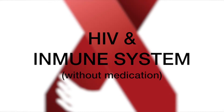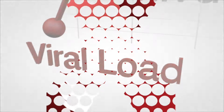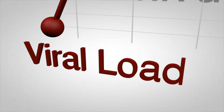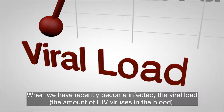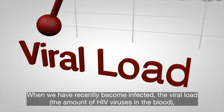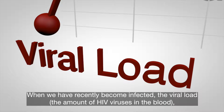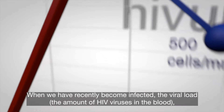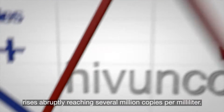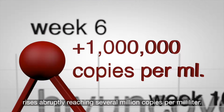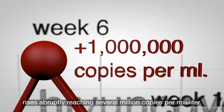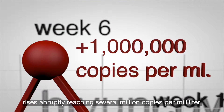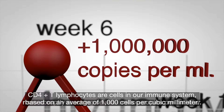We will see in this video how our immune system fights against HIV without using antiretrovirals. When we have recently become infected, the viral load — the amount of HIV viruses in the blood — rises abruptly, reaching several million copies per milliliter.